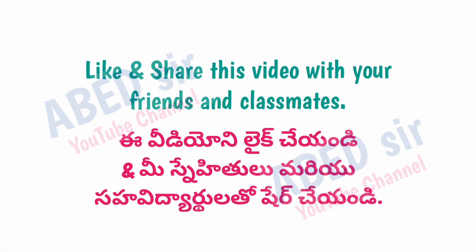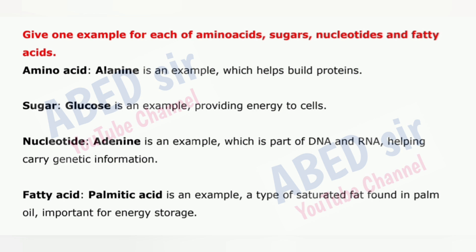Next important question: Give one example for each of amino acids, sugars, nucleotides, and fatty acids. Amino acid: alanine is an example, which helps build proteins. Sugar: glucose is an example, providing energy to cells. Nucleotide: adenine is an example, which is part of DNA and RNA, helping carry genetic information. Fatty acid: palmitic acid is an example, a type of saturated fat found in palm oil, important for energy storage.